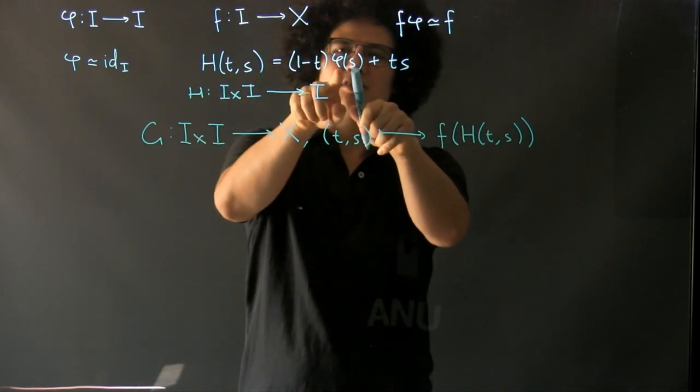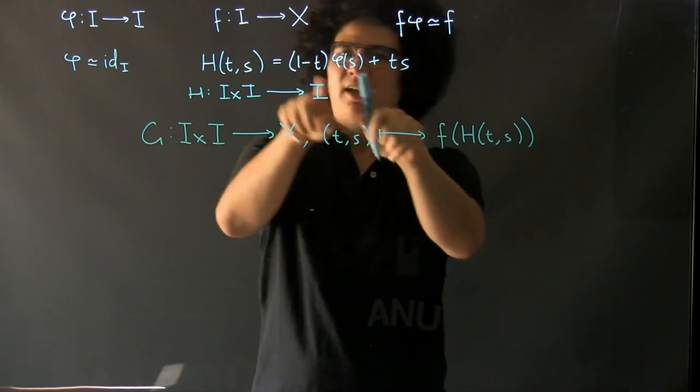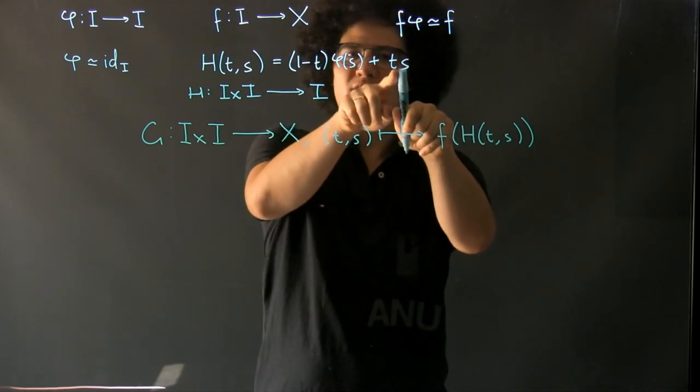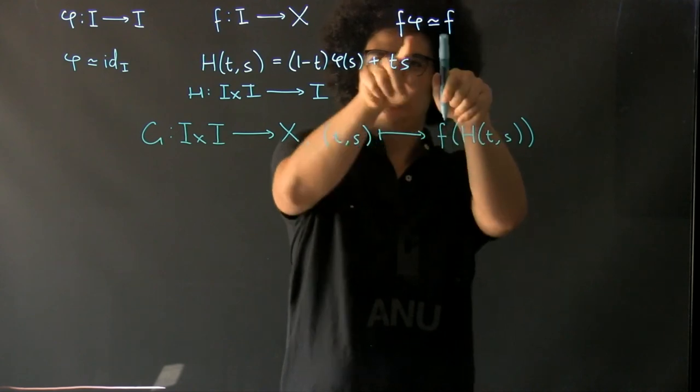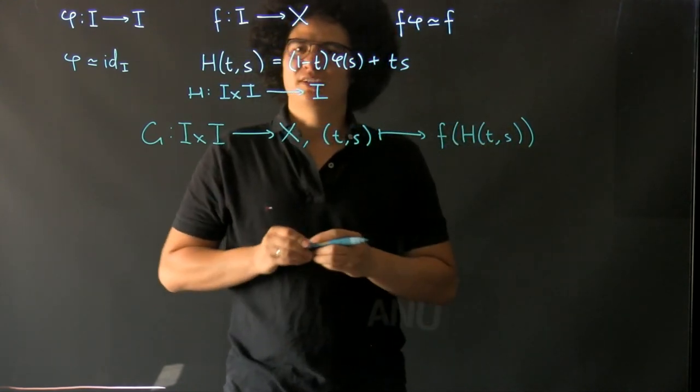And so you'll see that at time 0 this is going to be, well, H(0,s) is just φ(s) so this is going to be f applied to φ(s). And then at time 1, well this is just s so this is just going to be f applied to s. So that's how we get our homotopy by the reparametrization.